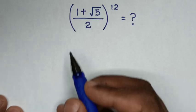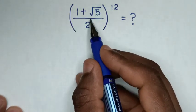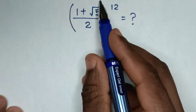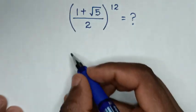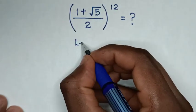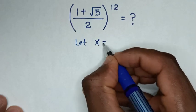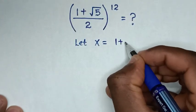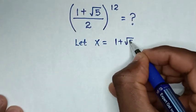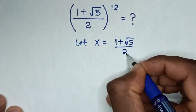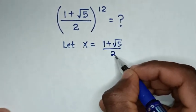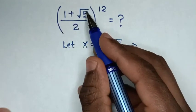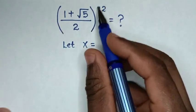Hello. How to solve (1 plus square root of 5) over 2, bracket to the power of 12. So first we let x be equal to the inside of the bracket: (1 plus square root of 5) over 2. Then in the next step, because we let this equal x, we'll be finding x to the power of 12.